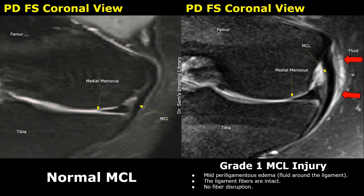The medial collateral ligament, or MCL, is one of the key ligaments that stabilizes the inner side of your knee. It runs from the femur to the tibia. Its main job is to prevent the knee from buckling inward, especially when there is a force pushing the knee from the outside. We call that a valgus force.